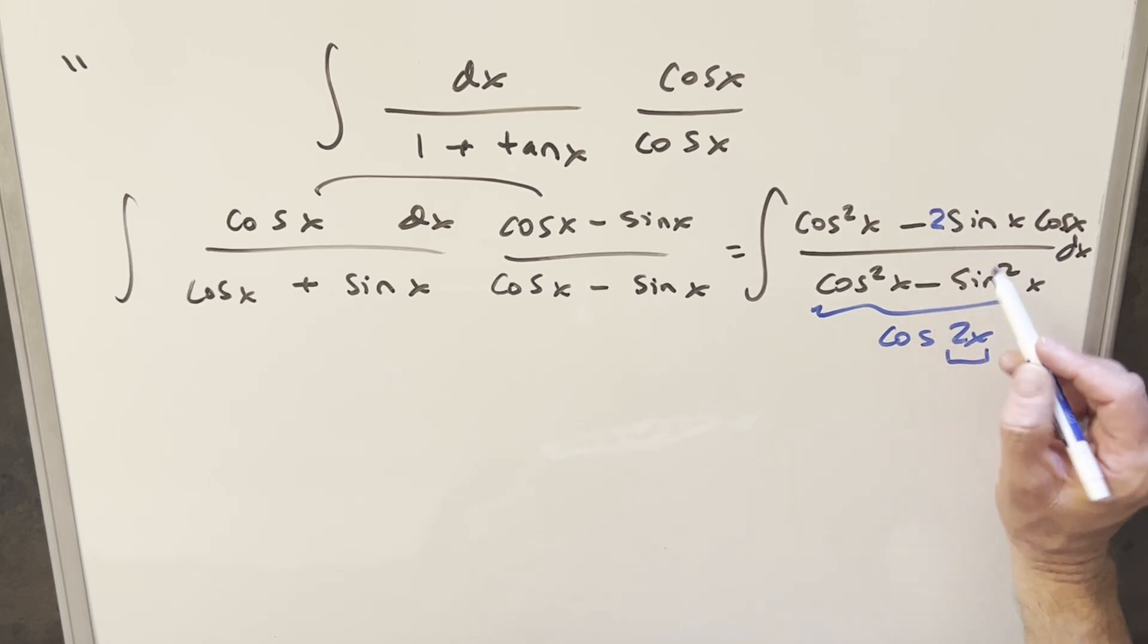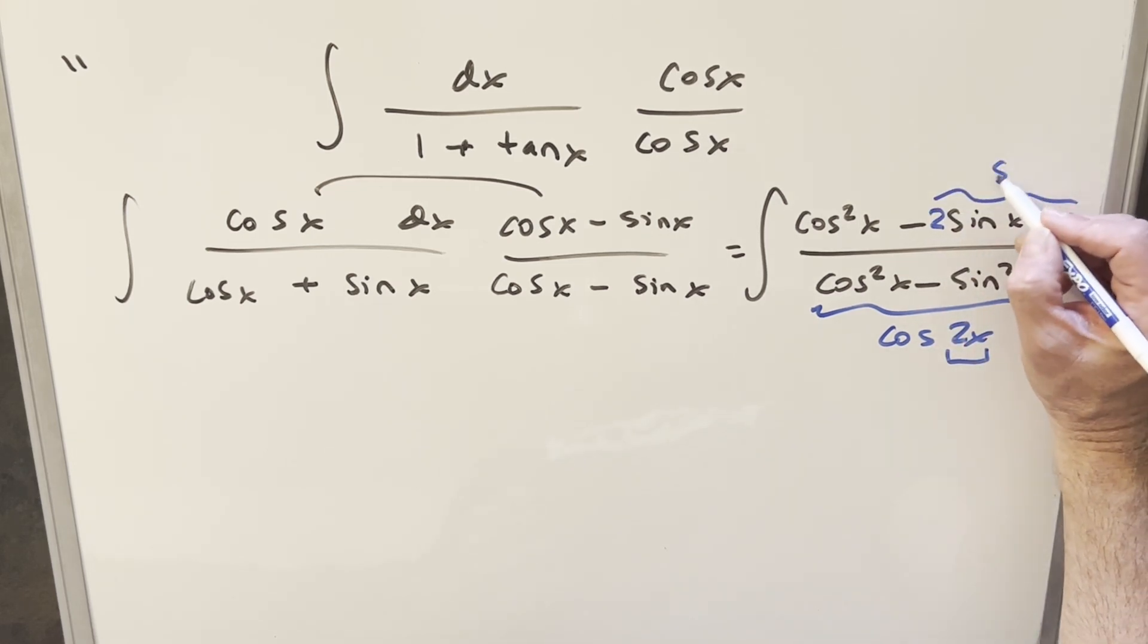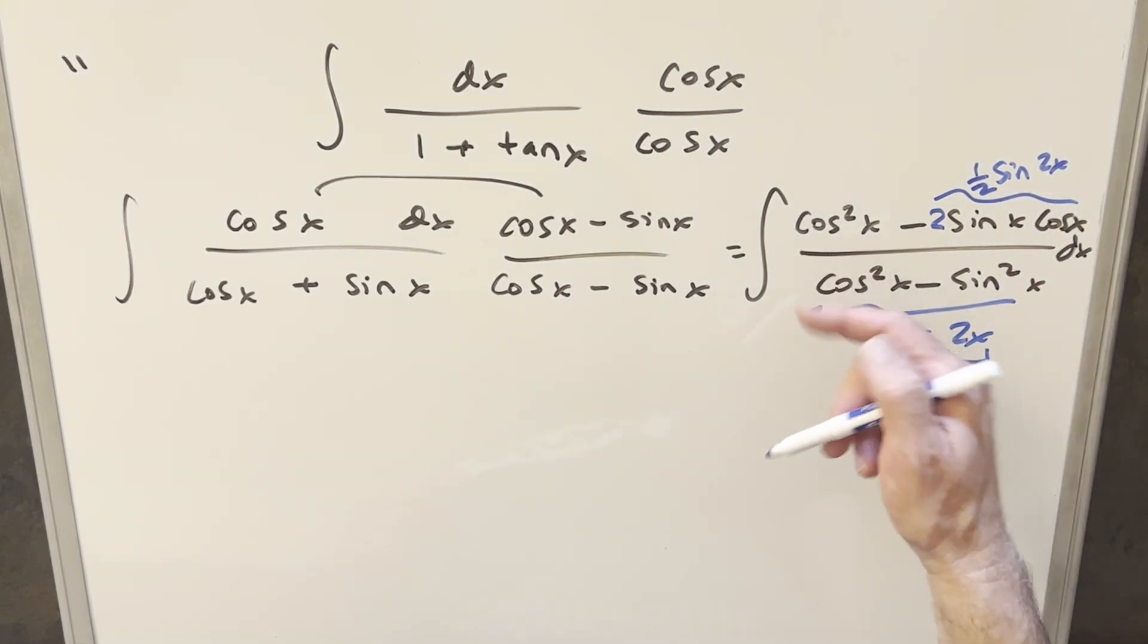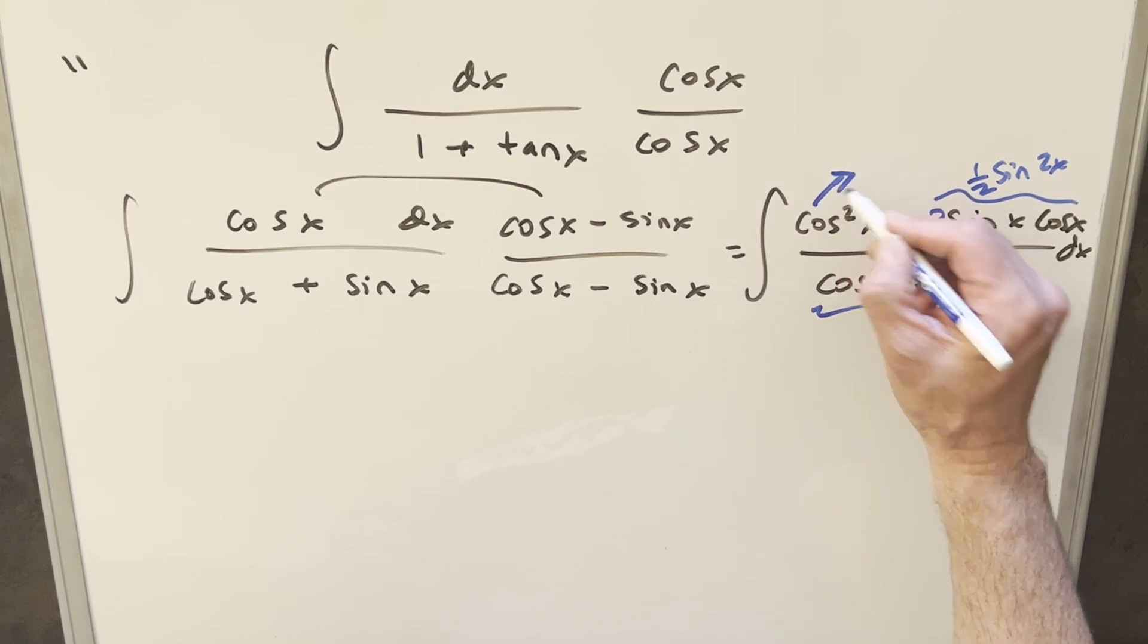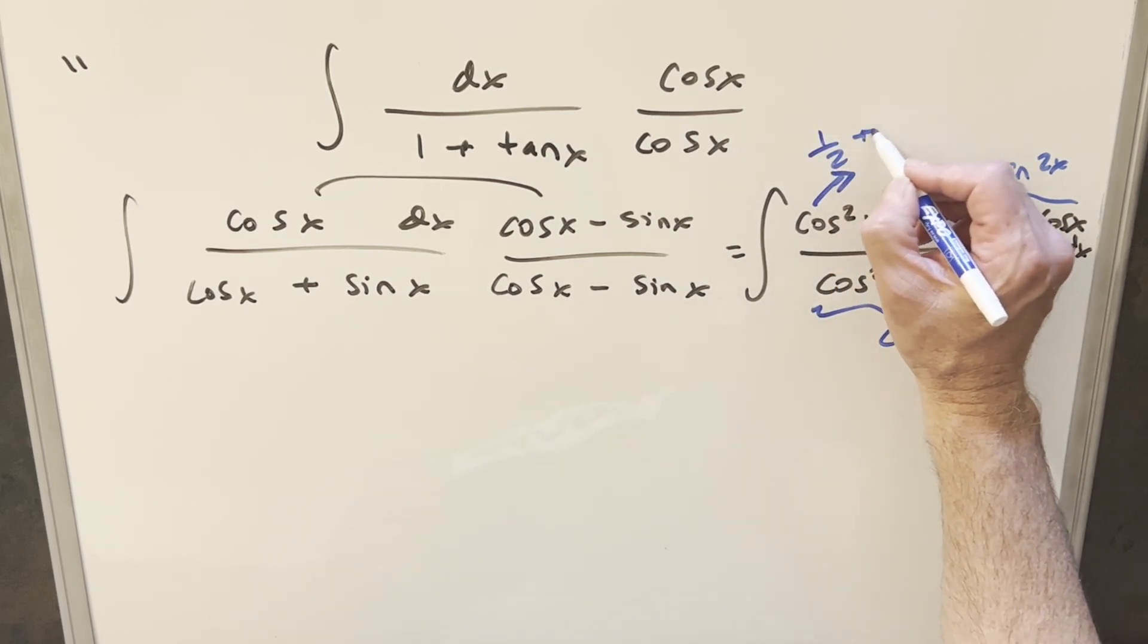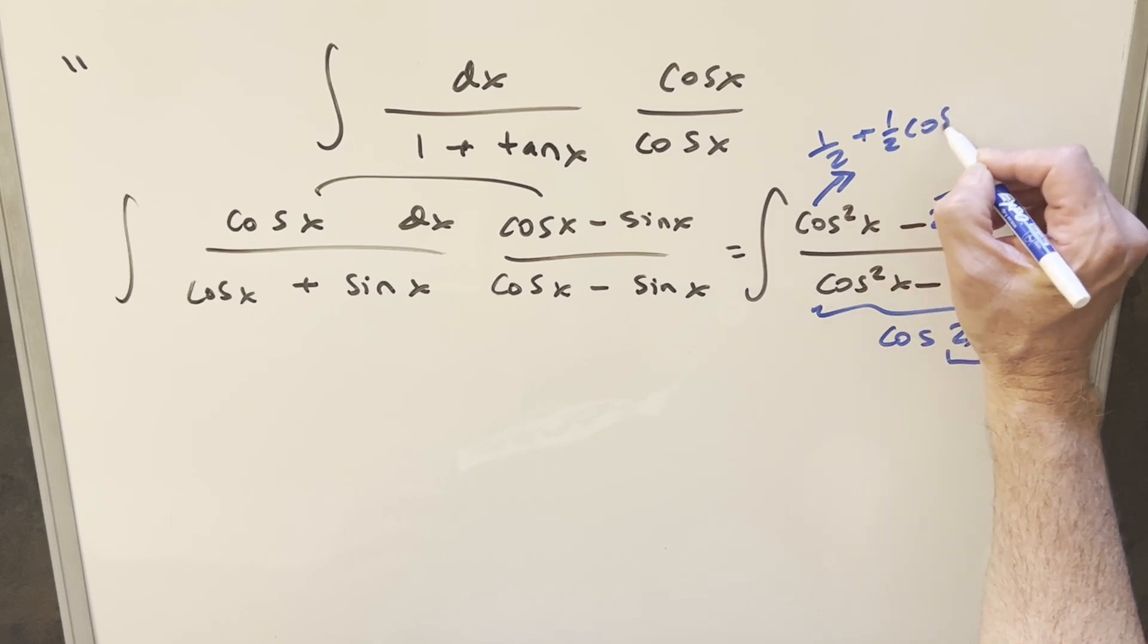If I multiply in a 2 here, this becomes sine 2x. But I don't want to change it, so I'll multiply by a half in front. And then for here, I can make this 2x as well, just using the formula cosine squared x. I can write it as one half plus one half cosine 2x.